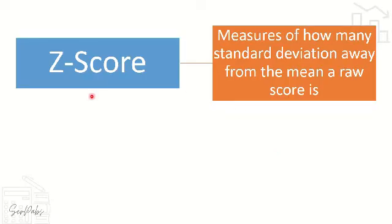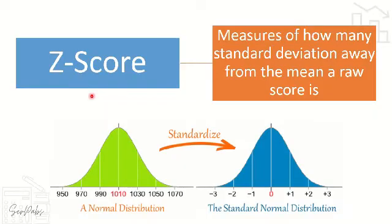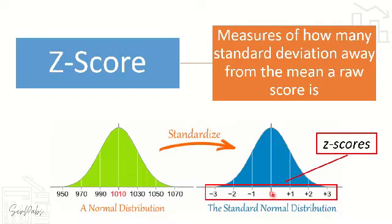Z score pertains to the measure of how many standard deviations away from the mean a raw score is. For example, we have our raw scores in a normally distributed data and we convert them to Z scores to measure how far away — either higher or lower than the mean — a certain score is. On the right side we have the positive Z scores, and on the left side of our normal curve we have our negative Z scores.